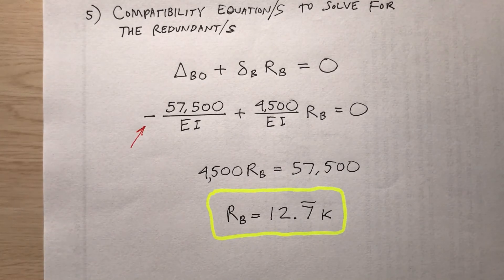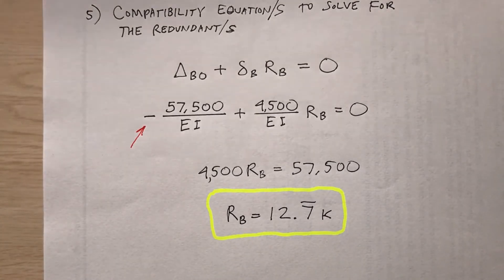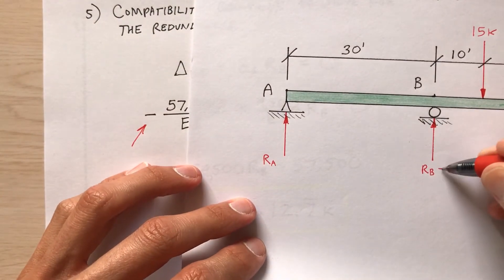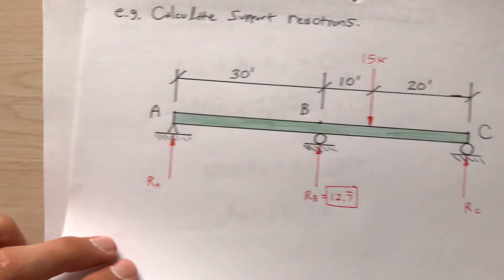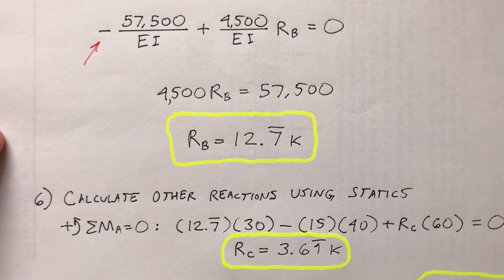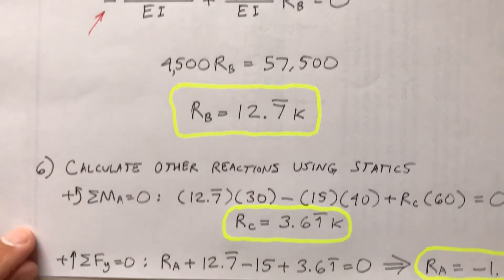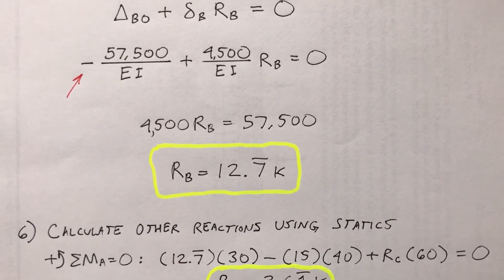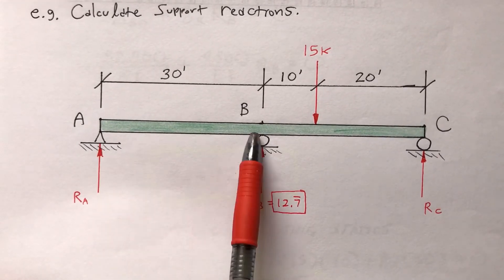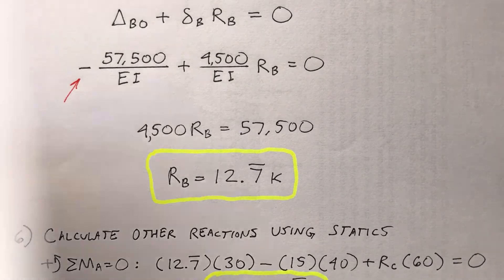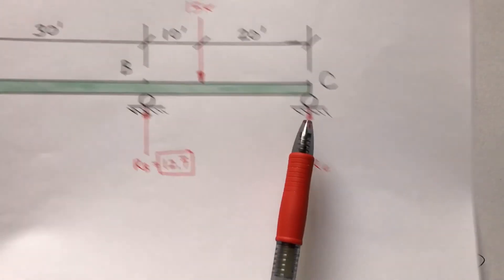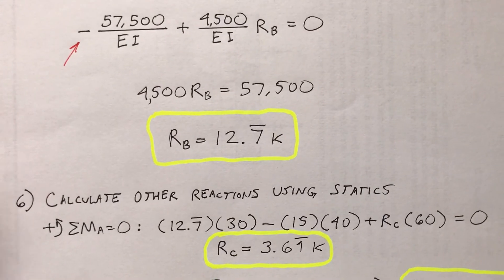So R sub B is 12.7 kips. How do I find R sub A and R sub C? Now I can use the equations of equilibrium from statics. Step six: calculate the other reactions using statics. Sum of moments about point A equals zero: 12.7 times 30, minus 15 times 40, plus R sub C times 60 equals zero. I find that the reaction at C is 3.61 kips.